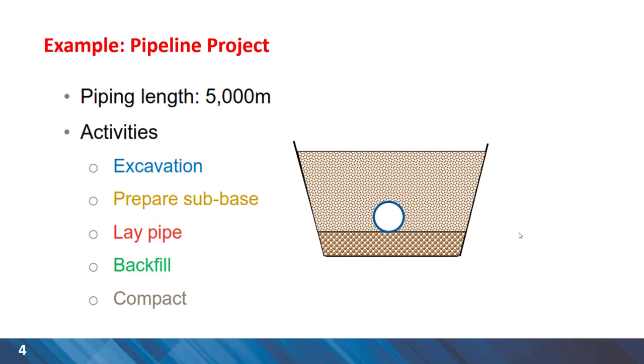Here is a pipeline project and the length for the project is 5 kilometers or 5,000 meters. There are five activities involved starting from excavation followed by preparing the subbase and laying pipes, backfilling and compaction.